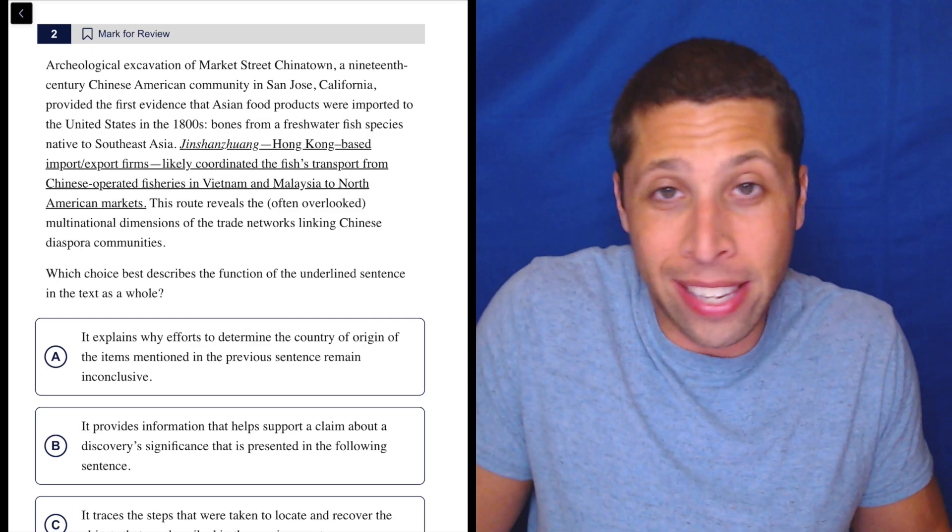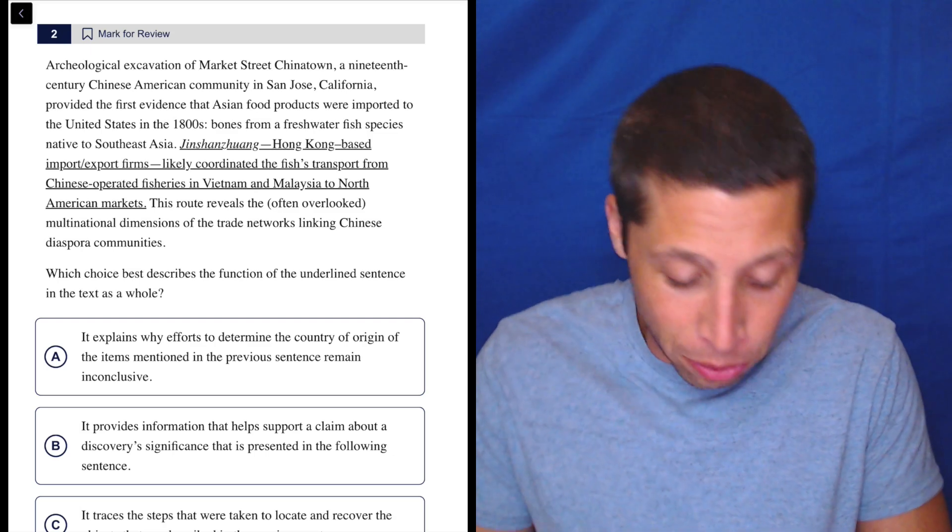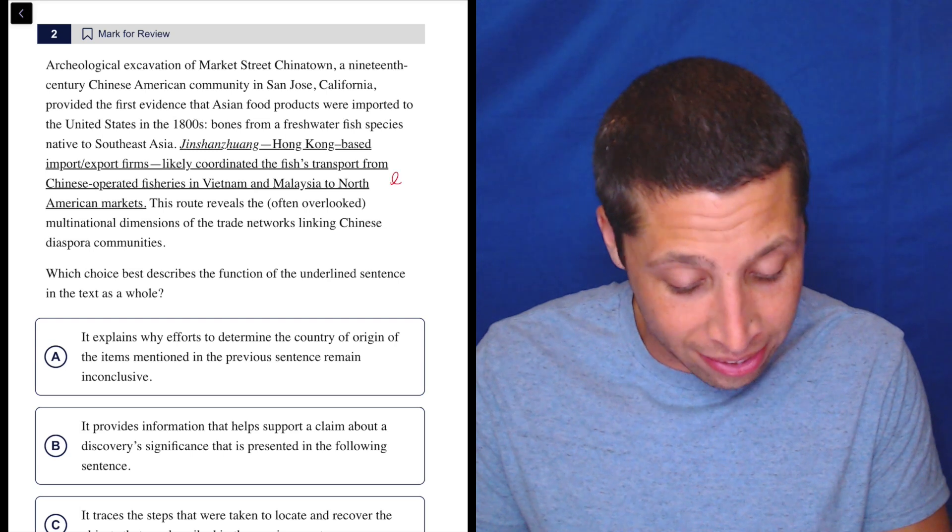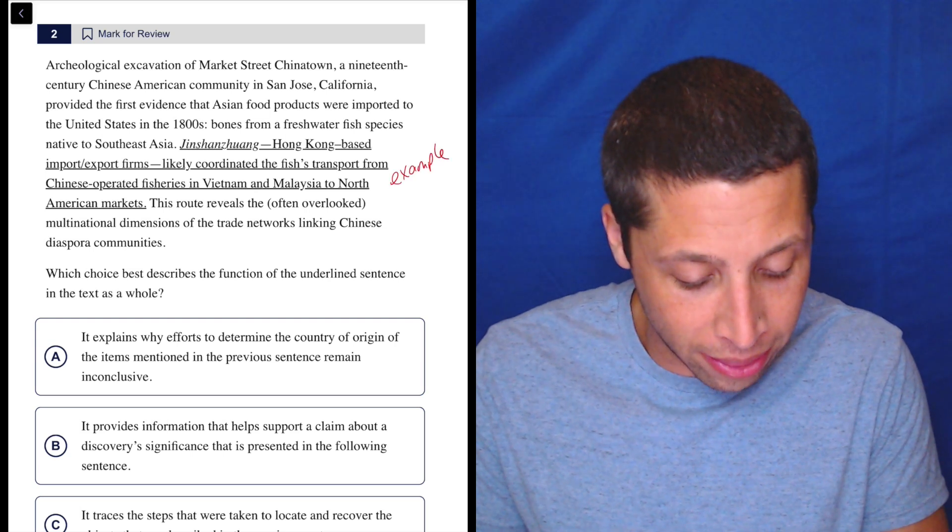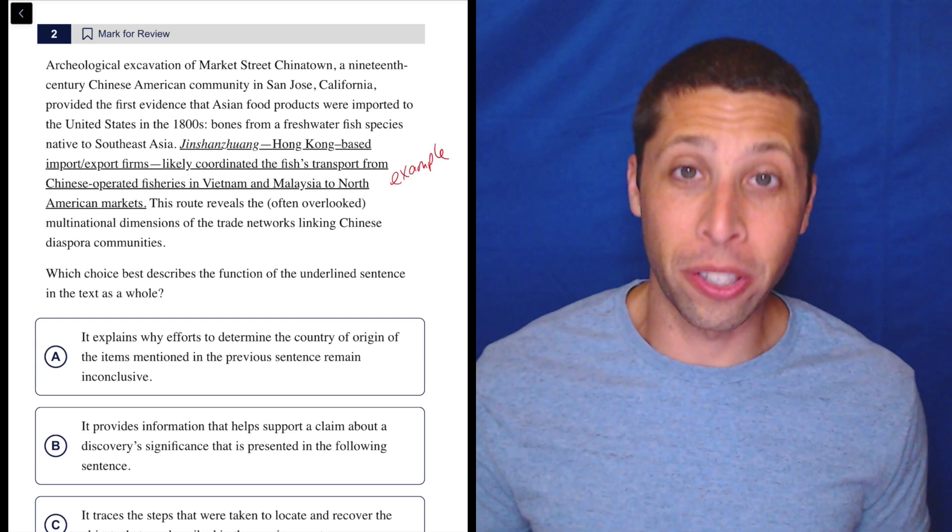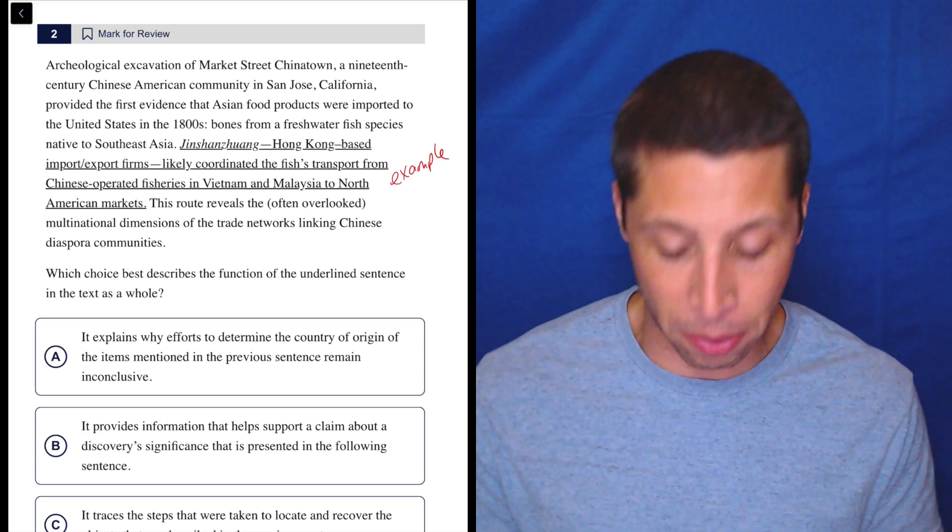So if I had to guess what it was doing, it's some sort of example or something like that. I'm not going to think too deeply about it though. Let's let the choices do the thinking for us. There's only four options. One of them's got to be right.